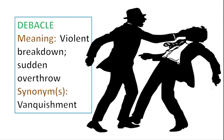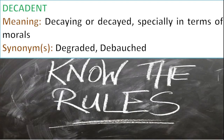We have advanced to D now. The first word starting with D is debacle — a violent breakdown or a sudden overthrow, with vanquishment as a synonym. We can also use debacle to refer to a fiasco, a disaster, or a great failure. If several dogs run onto the field during a cricket game and create chaos — players tripping, chewing up the grass — you can call the whole event a debacle. So debacle means an utter and complete failure and disaster.